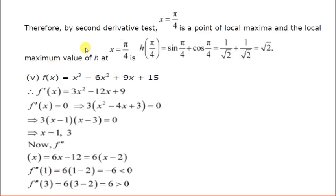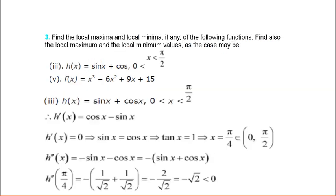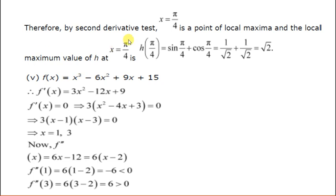When the double derivative at a point is less than 0, that point is a point of local maxima. Therefore, by second derivative test, x = π/4 is a point of local maxima, and the local maximum value of h at x = π/4 is sin(π/4) + cos(π/4) = 1/√2 + 1/√2 = √2.